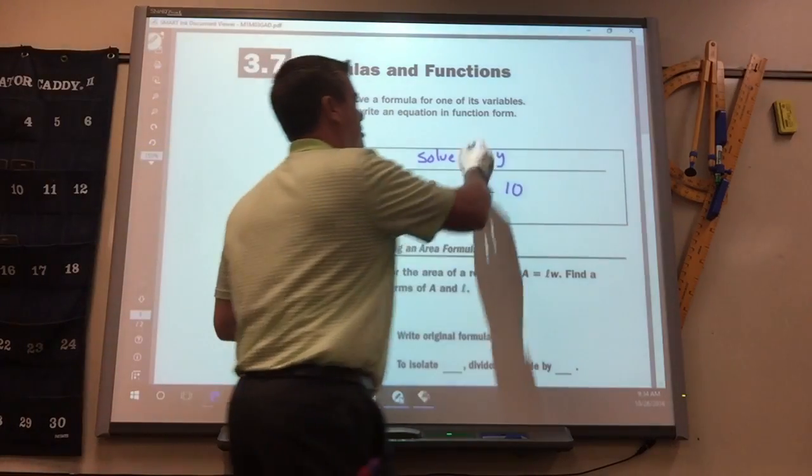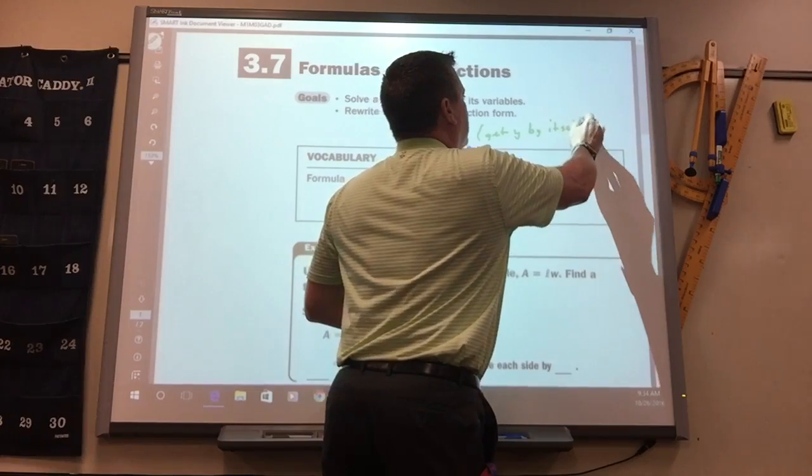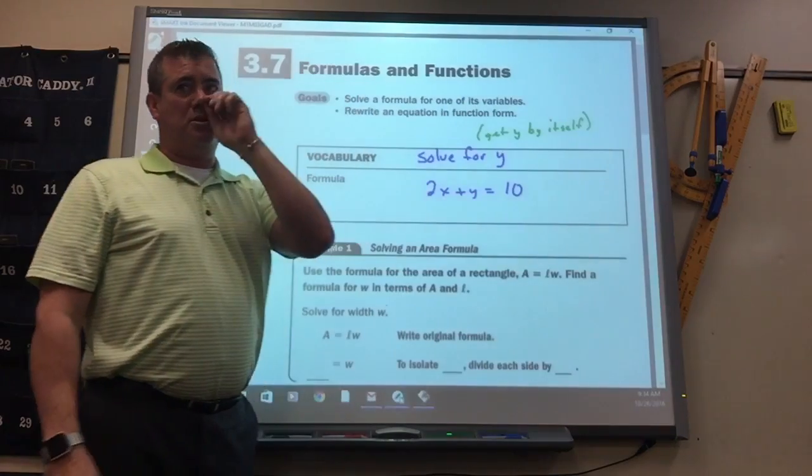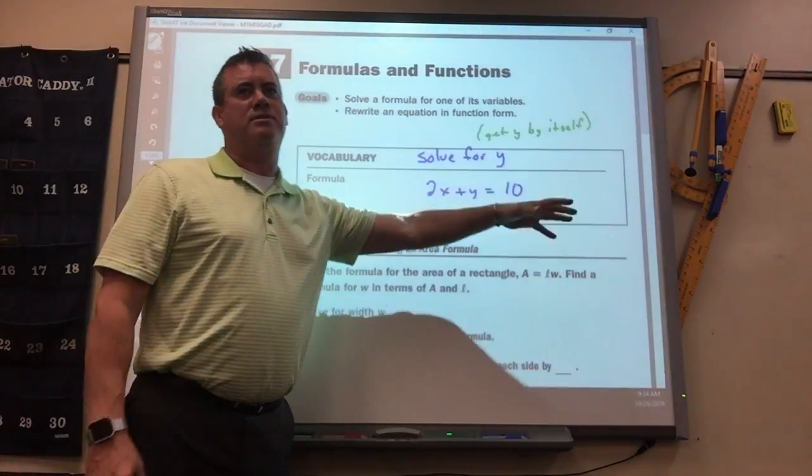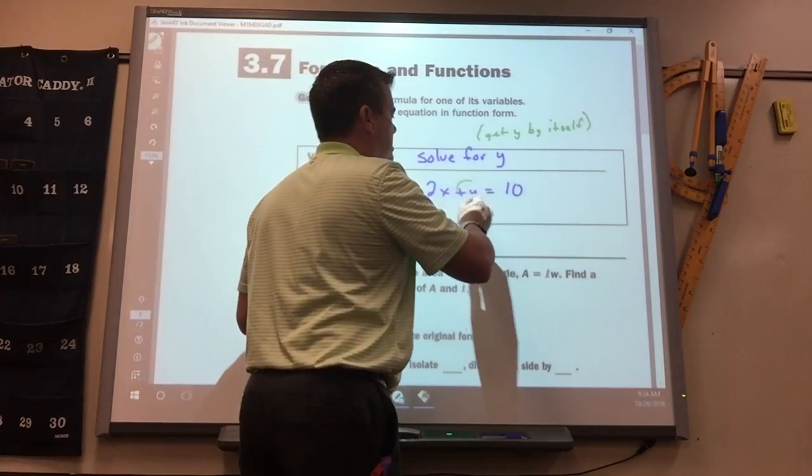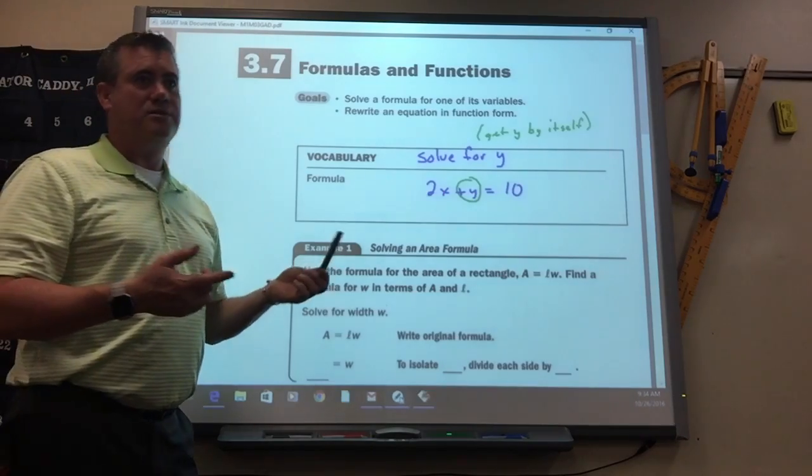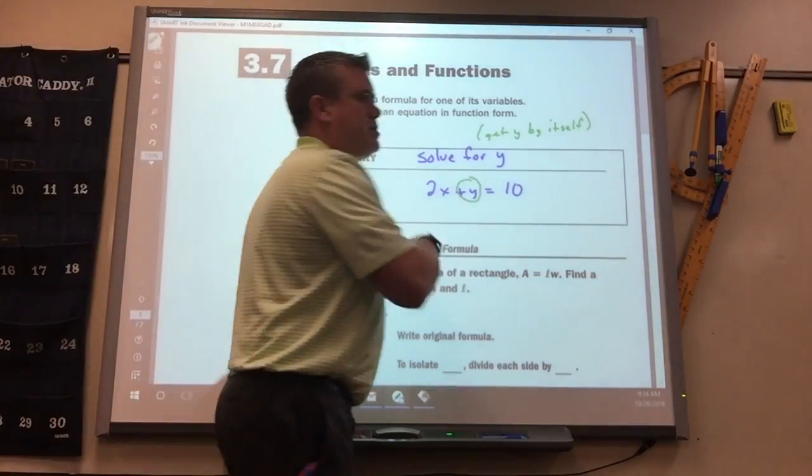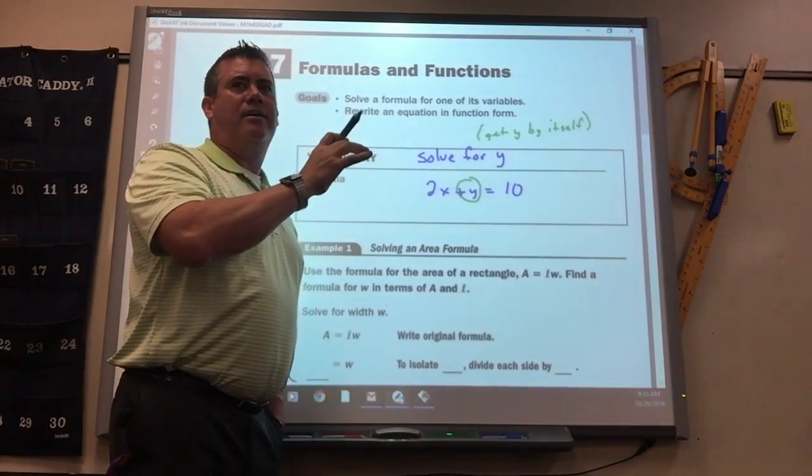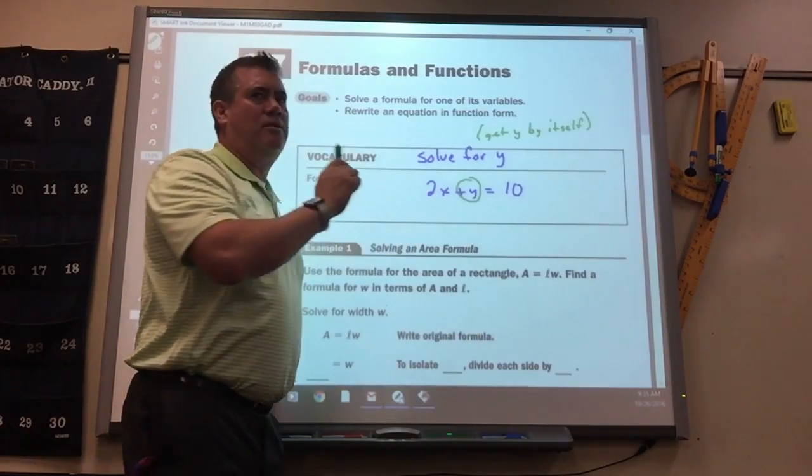Get y by itself. Anytime they tell you to solve for a letter, that means get that letter by itself. So you use the rules for solving equations, it's just a lot of times you can't combine anything. So to get this y by itself, what do you got to get rid of? The 2x. So, this is where it's easier to think of it in these terms. Anything not hooked to that letter, you get rid of that first. If anything's hooked to the letter, that's the thing you get rid of last.